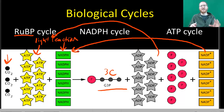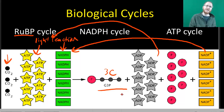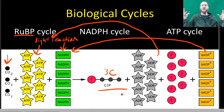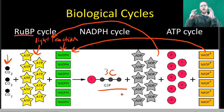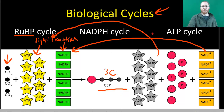The only things that really aren't part of a cycle in photosynthesis are the CO2s. But even they, if you include cellular respiration, are part of a bigger cycle — because cellular respiration takes sugars like G3P and breaks them back down into CO2, which plants then take and reattach to make sugars. So even that's part of a bigger cycle involving both cellular respiration and photosynthesis working together to break down and build stuff up.